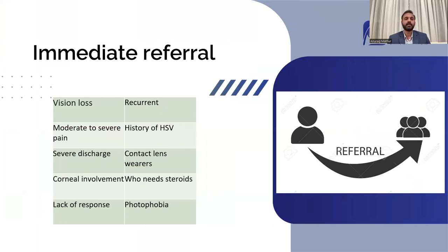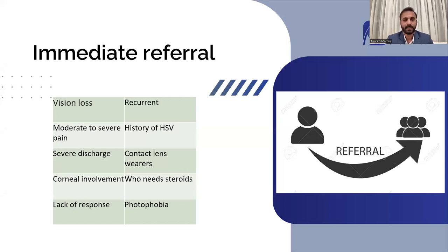We have understood the more common forms of conjunctivitis. Now, the most important thing for primary care physicians and optometrists — when to make a judicious referral. Any patient complaining of vision loss along with conjunctivitis, who is in moderate to severe pain, has severe discharge, already has corneal involvement in the form of an ulcer or infiltrate, or is not responding to treatment you are already giving should be referred.